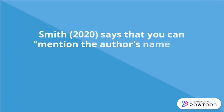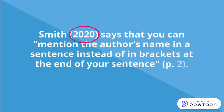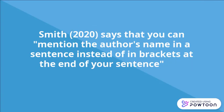You can also mention the author's last name in a sentence, followed by the date of publication in parentheses. If quoting directly, you will place the page number in parentheses at the end of your sentence, followed by a period to complete the in-text citation. You do not need to repeat the author's name or date. If your source does not include page numbers, indicate the paragraph where you found the information by using the abbreviation para. followed by a period, surrounded by parentheses, and followed by a period.